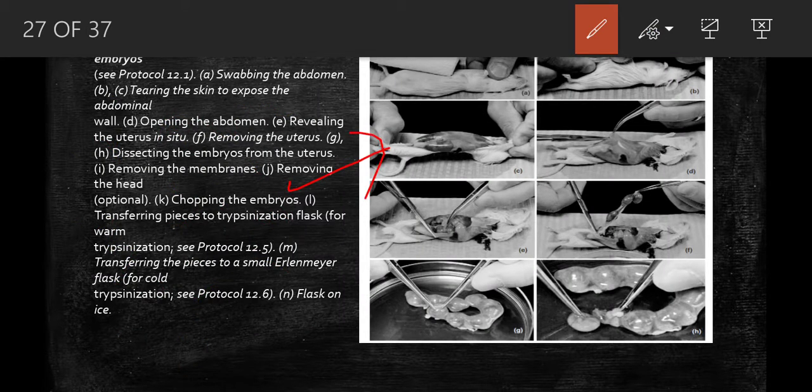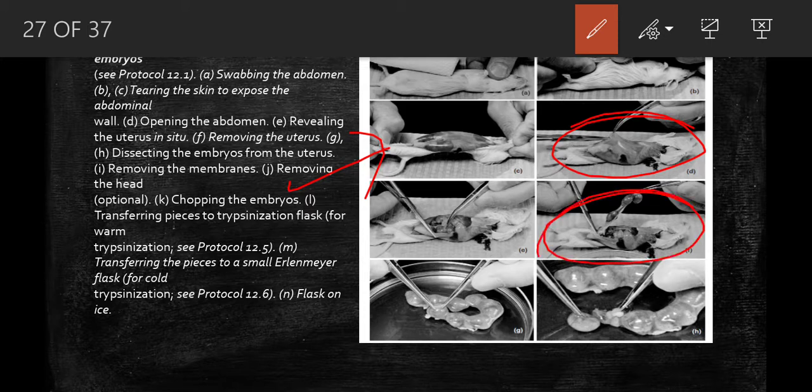After that, cut longitudinally along the median line and expose the abdomen with sterile scissors, revealing the viscera. At this stage you can see the uterus filled with embryos in the posterior abdominal cavity. Dissect and take out the uterus, then place it in a 25 to 50 ml screw-capped vial.